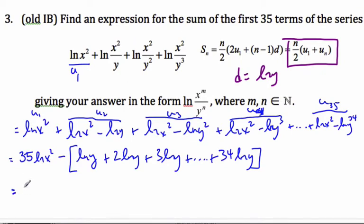I know this is 35 ln x squared. And this is the sum of the first 35 terms. Minus.